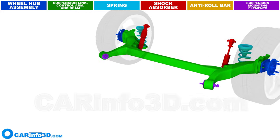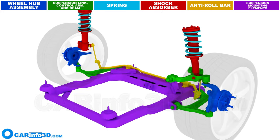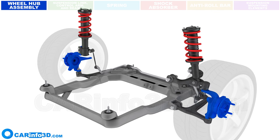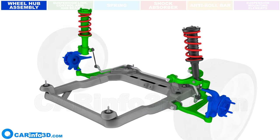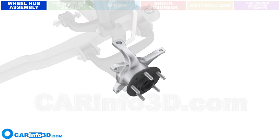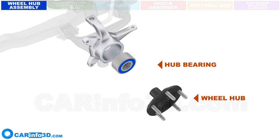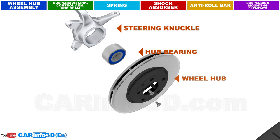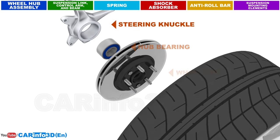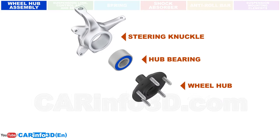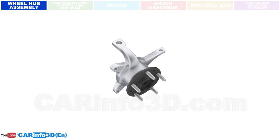Wheel hub. The wheel hub joins the wheels to the control arms, enabling their rotation. You can see a wheel hub and a hub bearing installed in the steering knuckle. The hub is attached to the brake disc and the wheel, and is mounted on the steering knuckle via the hub bearing, allowing the wheel to rotate.